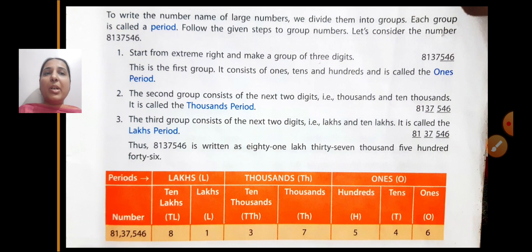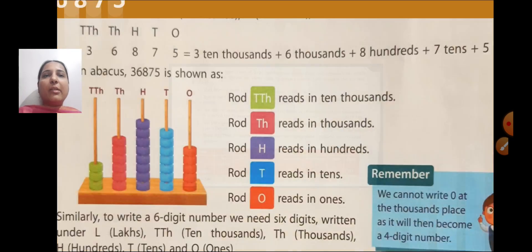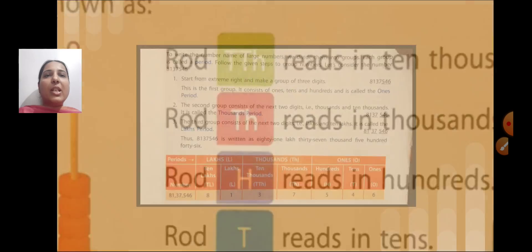Now, we will see how to write the number name of large numbers. To write the number name of large numbers, we divide them into groups. Each group is called a period.